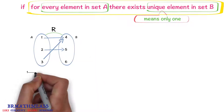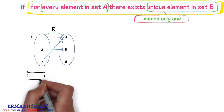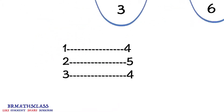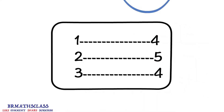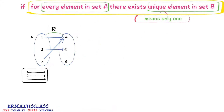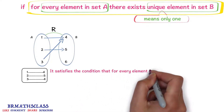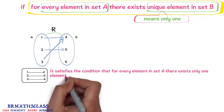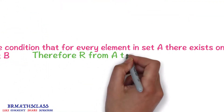For the element 1, there exists only one element, that is 4. For the element 2, there exists only one element, that is 5. For the element 3, there exists only one element, that is 4. For every element in set a, there exists only one element in set b. Don't confuse — elements 1 and 3 having the same image is different from the uniqueness condition. So it satisfies the condition, and therefore r from a to b is a function.